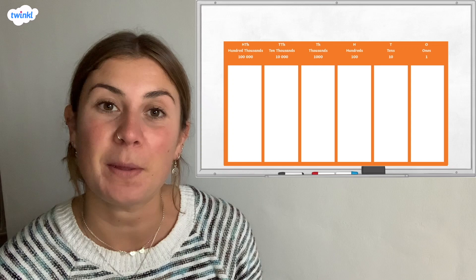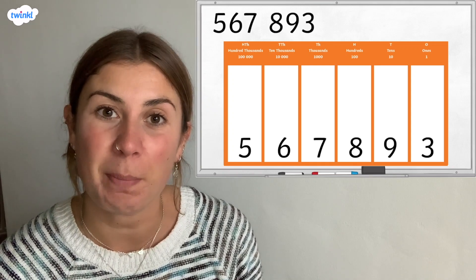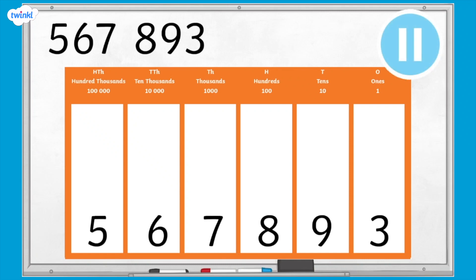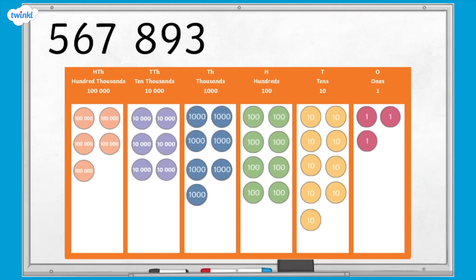Let's take a look at an example of a column subtraction calculation. We're going to begin with a blank place value grid. What number is written on the place value grid? That's right, it says 567,893. I'm going to represent this number in the place value grid using place value counters.